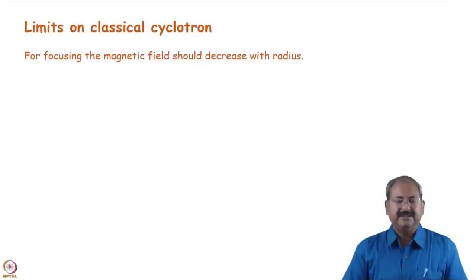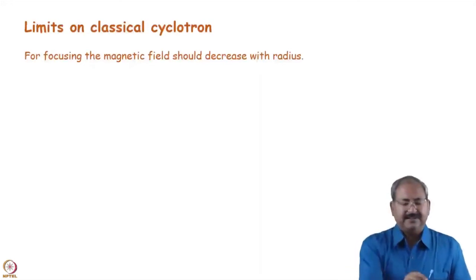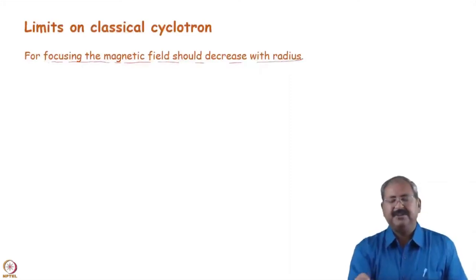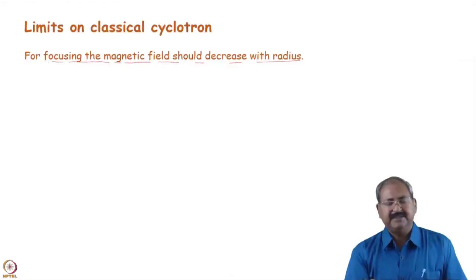So, now what is the limit on the cyclotron? We have seen recently that focusing of the magnetic field should decrease with radius. So, if you want to achieve the vertical focusing, magnetic field should decrease with radius. That's why we introduced the gradient in the magnetic field.